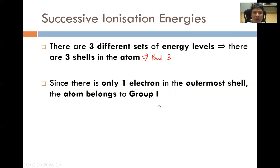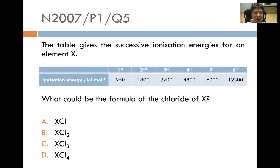November 2007, paper 1 question 5: the table gives the successive ionization energies for element X. What could be the formula of the chloride of X? We need to figure out the increase in ionization energy from the first IE to the second IE. The increase from first to second is 850, from second to third is 900, from third to fourth is 2,001, from fourth to fifth is 1,002, and from fifth to sixth is 6,003. The biggest jump is clearly between the fifth and sixth.